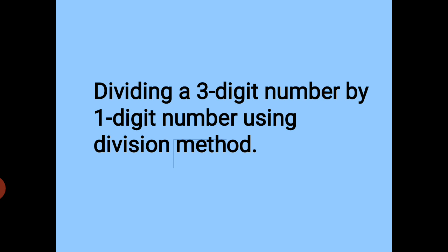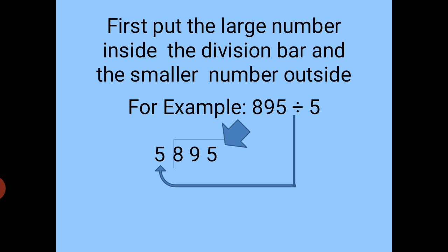So let's start with this division. First, put the larger number inside the division bar and the smaller number outside. For example, suppose we are having the number 895. Now we have to divide this number by 5. In this question the divisor is 5 and the dividend is 895.